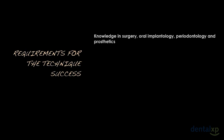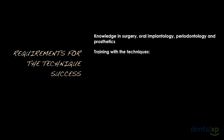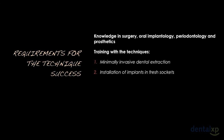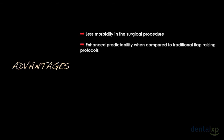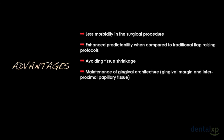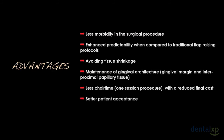The requirements for technique success include: knowledge in surgery, oral implantology, periodontology, and prosthetics; training with the technique; minimally invasive dental extraction; installation of implants in fresh sockets; harvesting of maxillary tuberosity graft; and construction of provisional crown with appropriate emergence profile. Some advantages of this technique include: less morbidity in the surgical procedure; enhanced predictability compared to traditional flap-raising protocols; avoiding tissue shrinkage; maintenance of gingival architecture, gingival margin, and interproximal papillary tissue; less chair time; a one-session procedure with reduced final cost; and better patient acceptance.